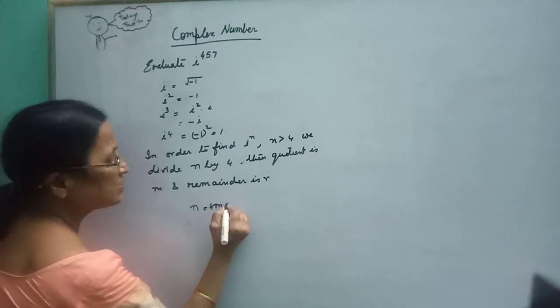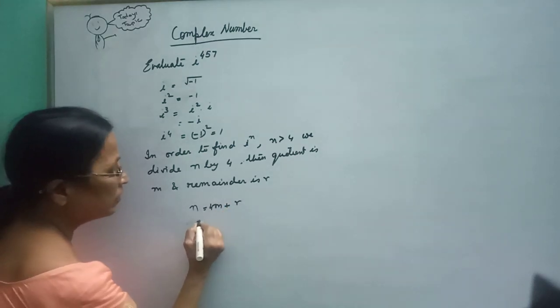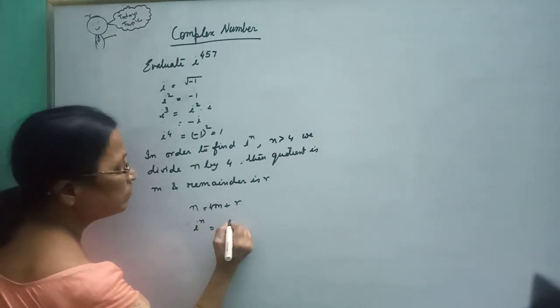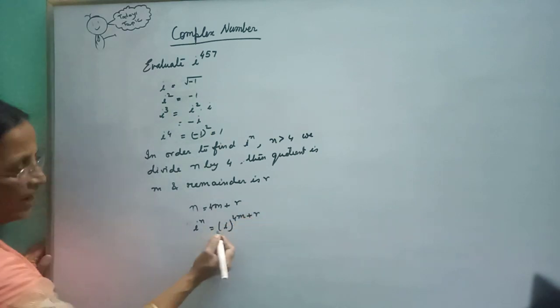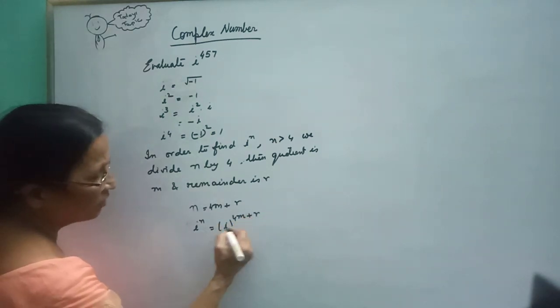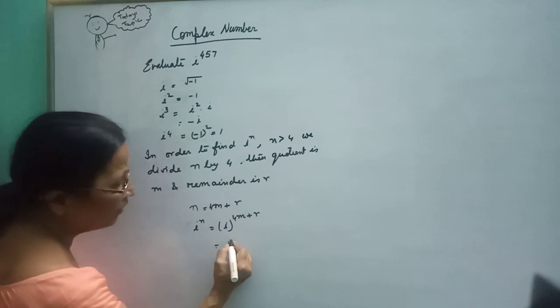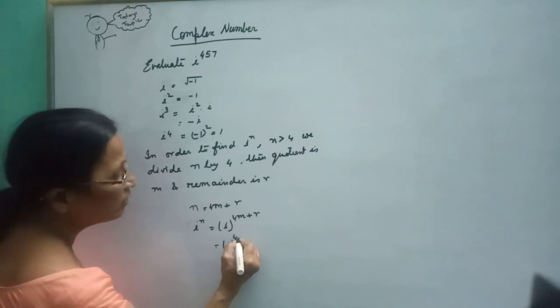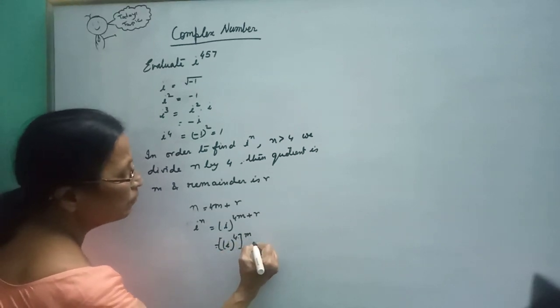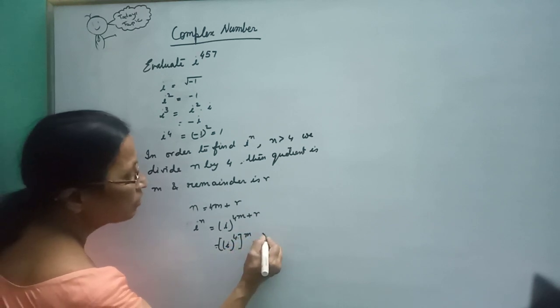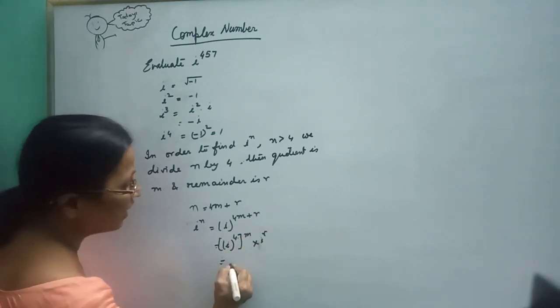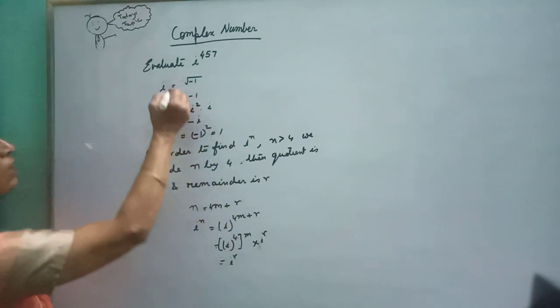So i to the power n can be written as i to the power 4m plus r. This equals i to the power 4m into i to the power r. Since i to the power 4 is 1, this simplifies to i to the power r.